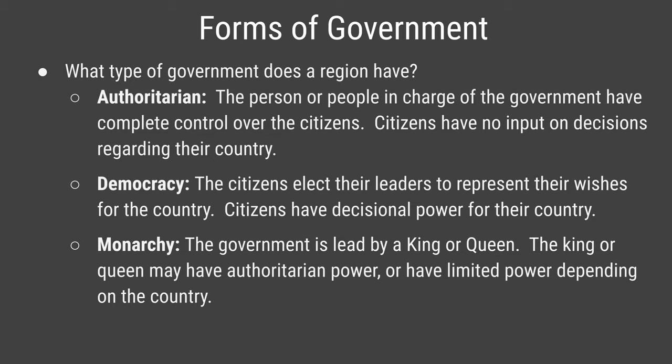Next in the seven elements of culture is the type of government a culture has. Government is a body that provides laws and structures within a country and can take many forms. An authoritarian government is one where the person or people in charge have complete control over citizens, meaning citizens have no input on decisions affecting their country. An authoritarian leader can simply declare a law without a citizen vote, and can also control things like which countries their nation trades with.